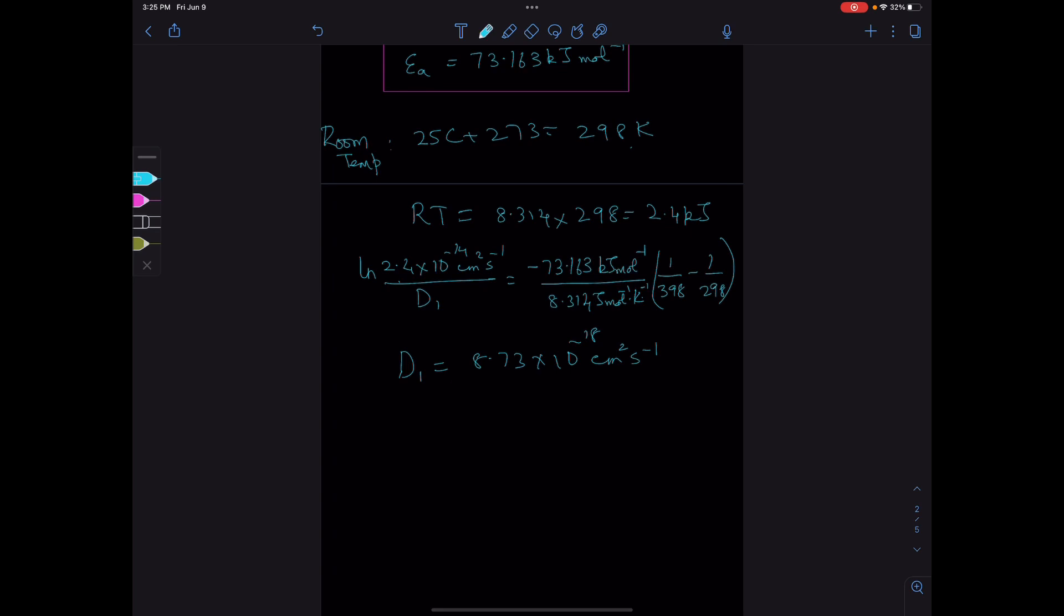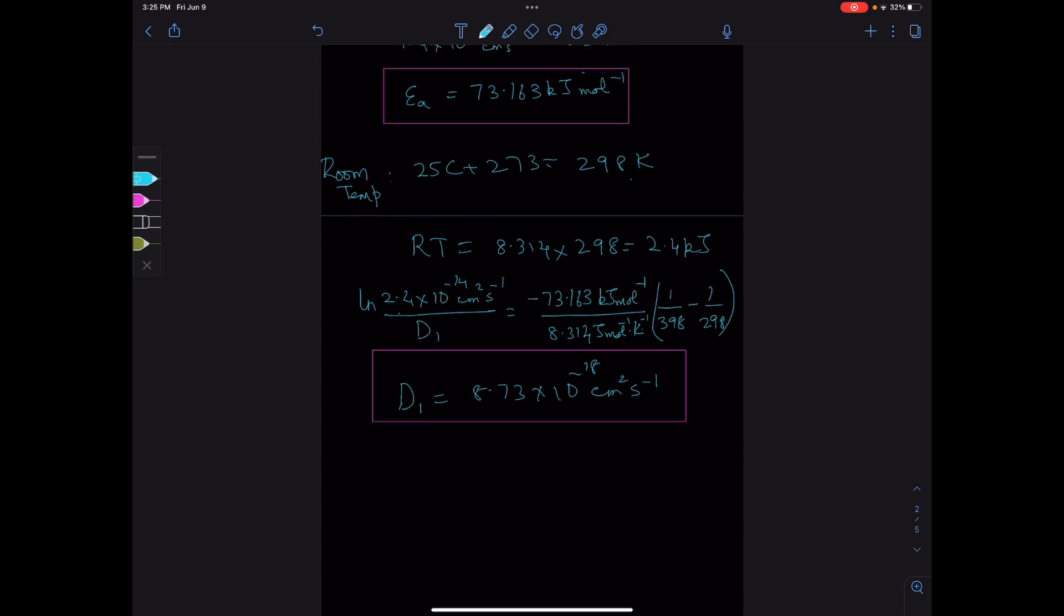So the diffusion coefficient at room temperature is much lower. Looking at Table 5.9, the linear polybutadiene has a diffusion coefficient of 4.8 × 10^-11 cm²/s.